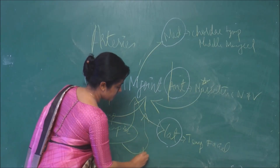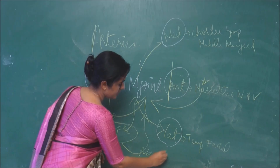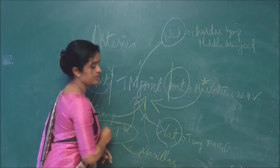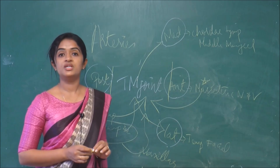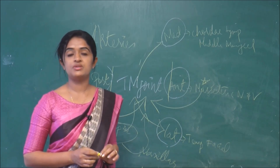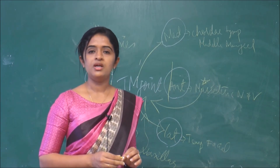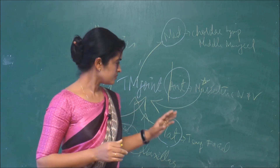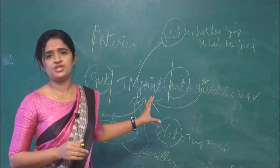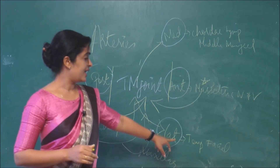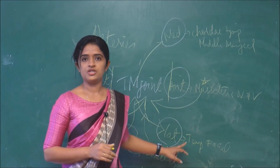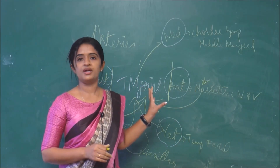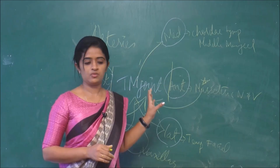The maxillary artery also will be supplying the temporomandibular joint. So the superficial temporal and maxillary artery — these are the two terminal branches of the external carotid artery which arise inside the parotid gland. The parotid gland, as we have already mentioned, is the lateral relation of the temporomandibular joint. So these two arteries will be supplying the temporomandibular joint.